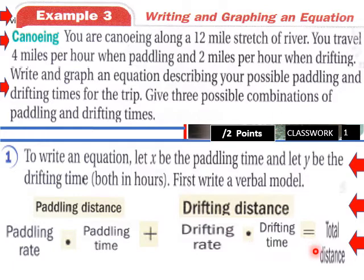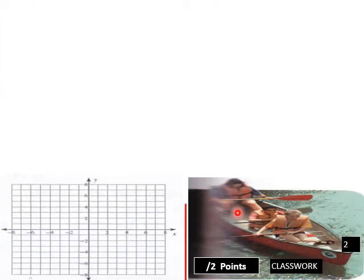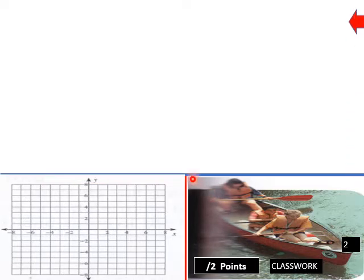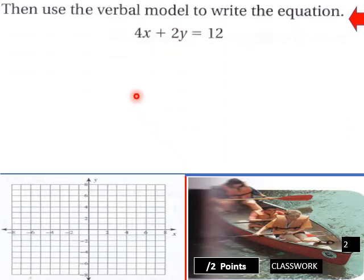That will equal total distance, which is 12 miles. So we have paddling rate and drifting rate broken down. Using the verbal model to write the equation, we get 4x plus 2y equals 12.